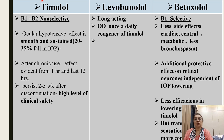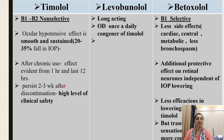Timolol is non-selective and acts on both beta-1 and beta-2 receptors. Its ocular hypotensive effect is smooth and sustained, producing a 20 to 35% fall in intraocular tension. After chronic use, the effect is sustained and even if 1 to 2 doses are missed, the effect persists 2 to 3 weeks after discontinuation. Timolol therefore has a high level of clinical safety.